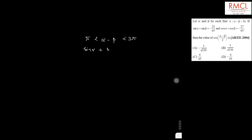Let's see this question which came in AIEEE 2004 — trigonometric equations. We are given that alpha minus beta is greater than pi and less than 3pi. Sin alpha plus sin beta is equal to minus 21 by 65, and cos alpha plus cos beta is minus 27 by 65. We have to find the value of cos((alpha minus beta) by 2).